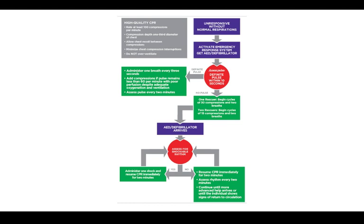If you have an unresponsive infant or child without normal respirations, activate the emergency response system and get an AED. Assess the pulse within 10 seconds. If there is a definite pulse, administer one breath every three seconds. Add compressions if the pulse remains less than 60 per minute despite adequate oxygenation and ventilation, and reassess the pulse every two minutes. If there is no pulse, one rescuer should begin cycles of 30 compressions and two breaths; if there are two rescuers, begin cycles of 15 compressions and two breaths. Once an AED is brought to the scene, use it — the AED will assess for a shockable rhythm. If the rhythm is shockable, administer one shock and resume CPR immediately for two minutes. If not shockable, resume CPR immediately for two minutes, assess the rhythm every two minutes, and continue until advanced help arrives or the individual shows signs of return of circulation.